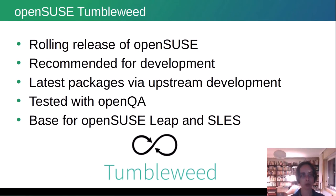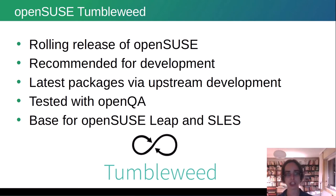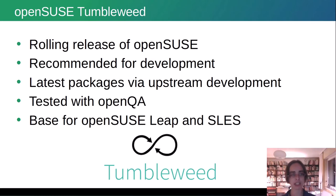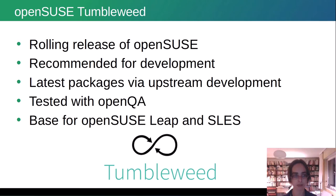Now we come to OpenSUSE Tumbleweed. OpenSUSE Tumbleweed is our rolling release. It is recommended for development and experienced users because you receive the latest packages via upstream development. It is tested with OpenQA. Many of our users ask where are the breaks in a rolling release — we don't receive any breaks because it is so well tested automatically with OpenQA before releases.